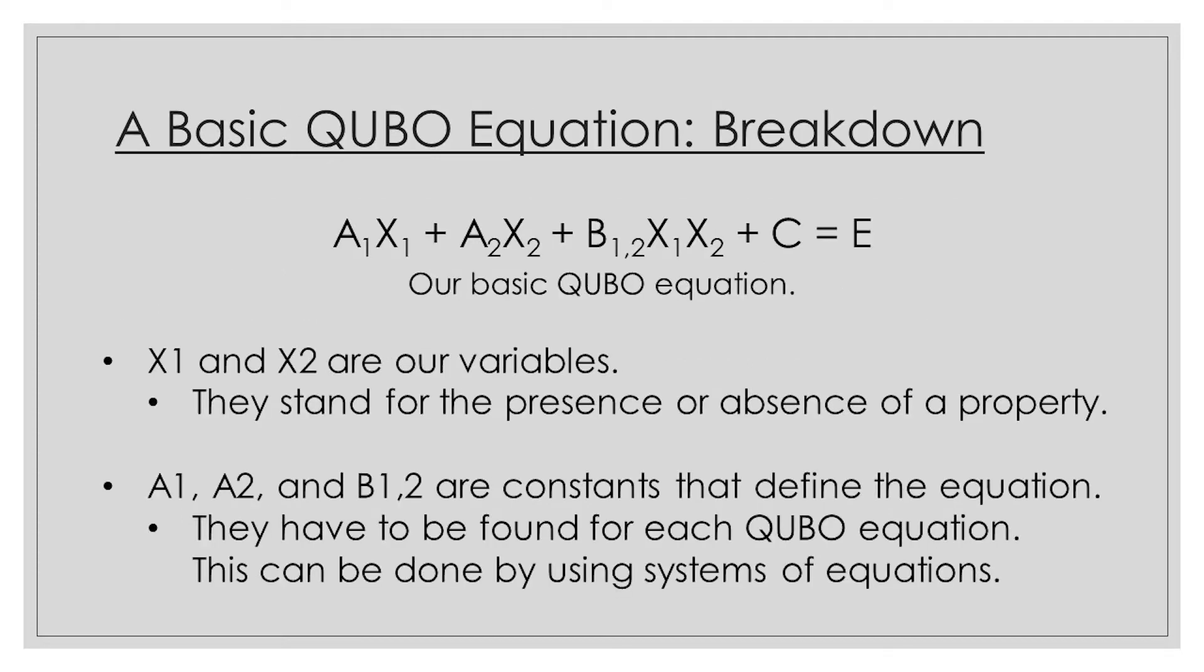Let's try out an example. We'll start off with a basic QUBO equation like this one: a1x1 plus a2x2 plus b1,2x1x2 plus c, where c is a constant. Before we actually discuss how we're going to do this, we need to break down this equation and understand what each part of it really means. Let's take a look at the various parts of the equation.